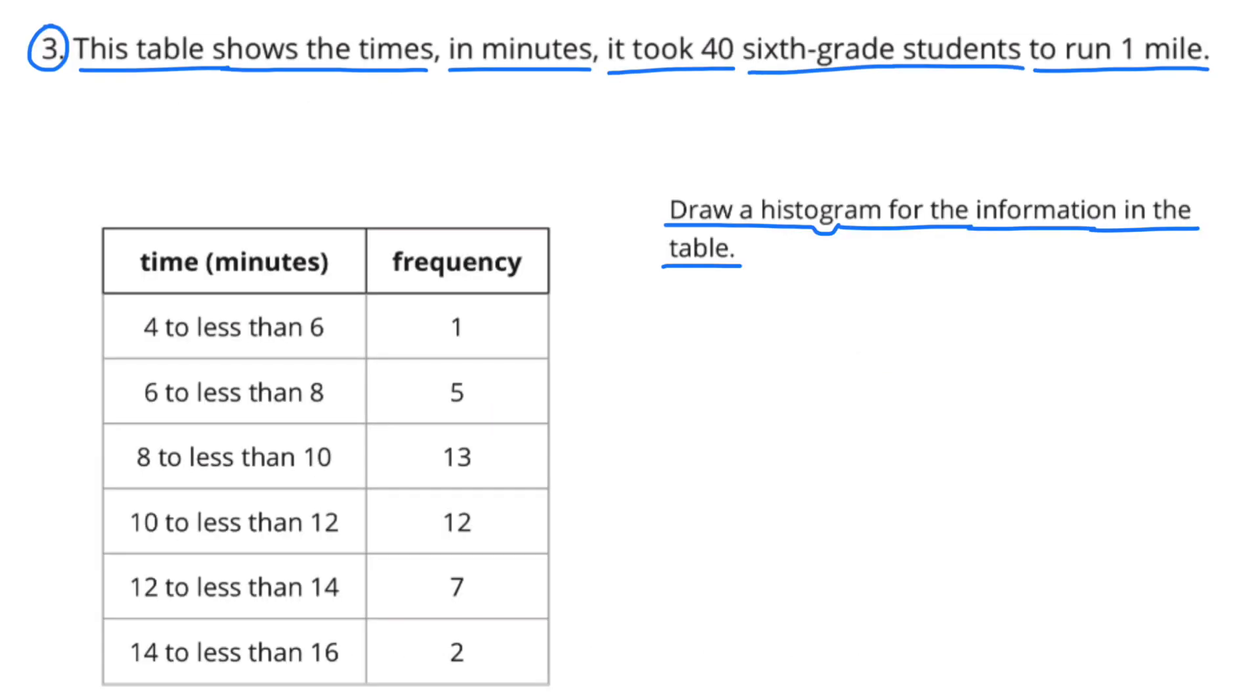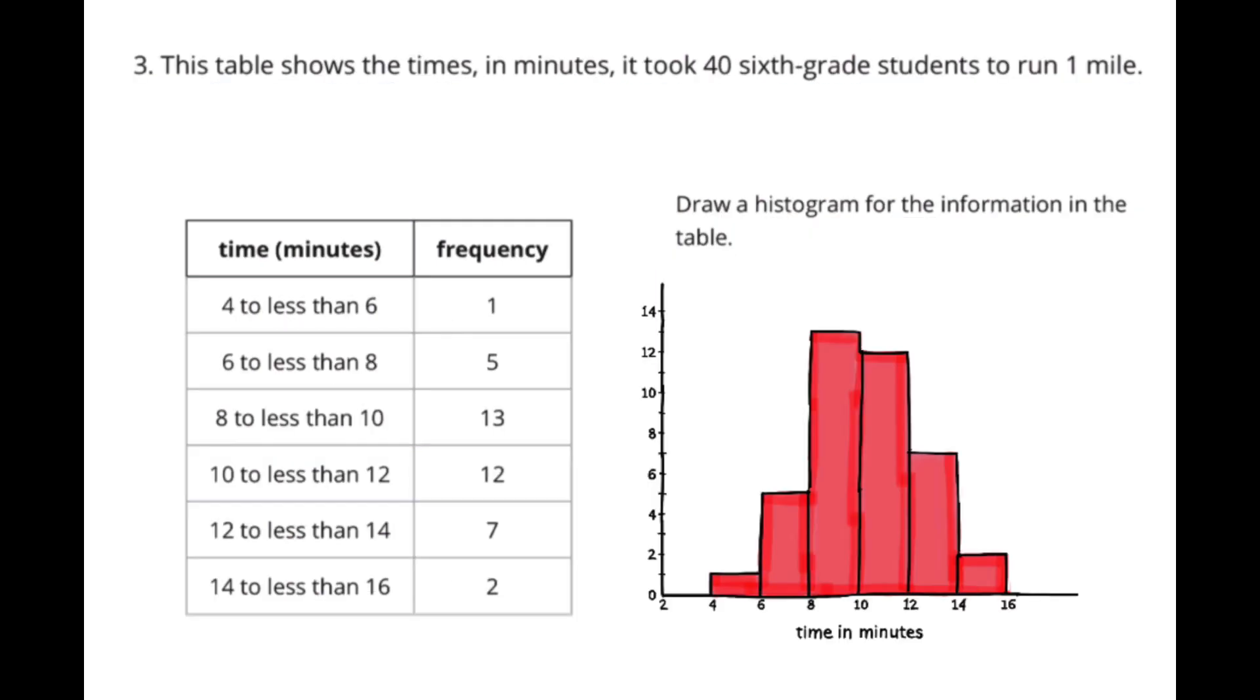Number 3. This table shows the times in minutes it took 40 sixth-grade students to run one mile. Draw a histogram for the information in the table. From 4 minutes to less than 6 minutes there's a frequency of 1. From 6 minutes to less than 8 minutes there's a frequency of 5. From 8 minutes to less than 10 minutes there's a frequency of 13.